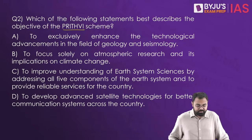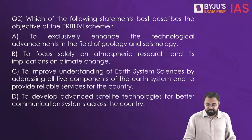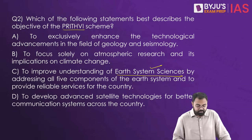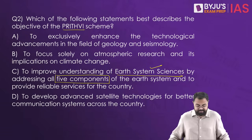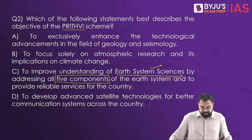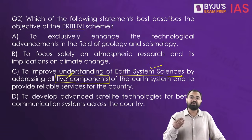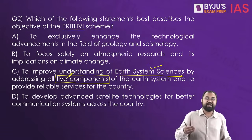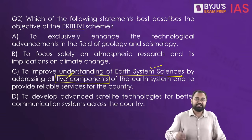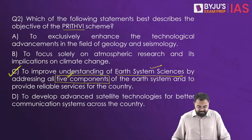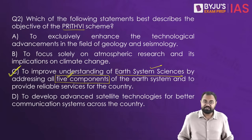Looking at the options: the first is to exclusively enhance technological advancements in geology and seismology. The second is to focus solely on atmospheric research. The third is to improve understanding of earth system sciences by addressing all five components of the earth system and to provide reliable services for the country — this is correct, because those five components include air, water, land, biosphere, and cryosphere. So C is the correct answer, and option D is also not related to this scheme.